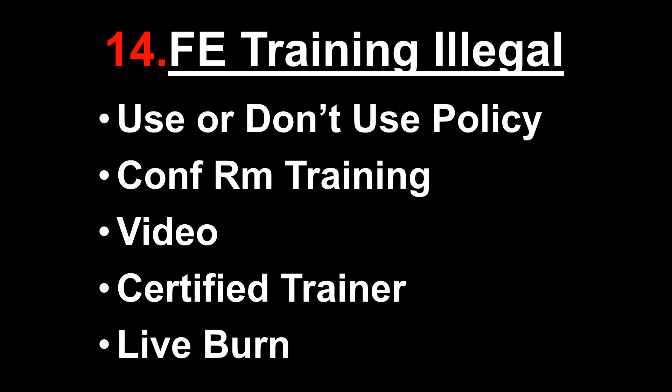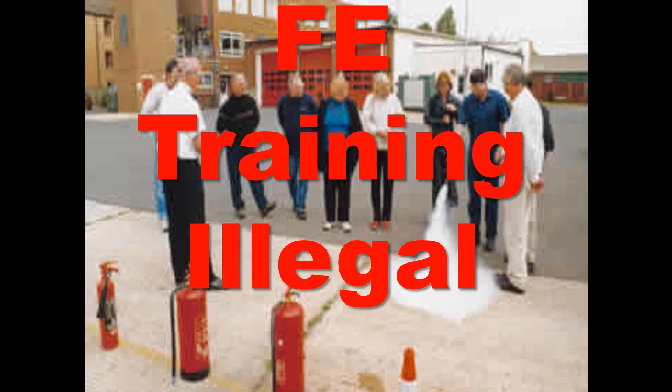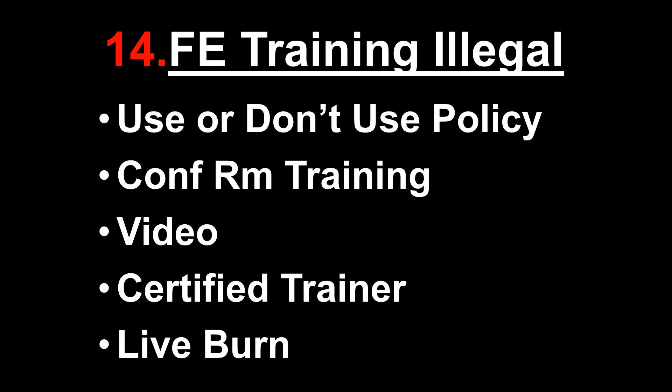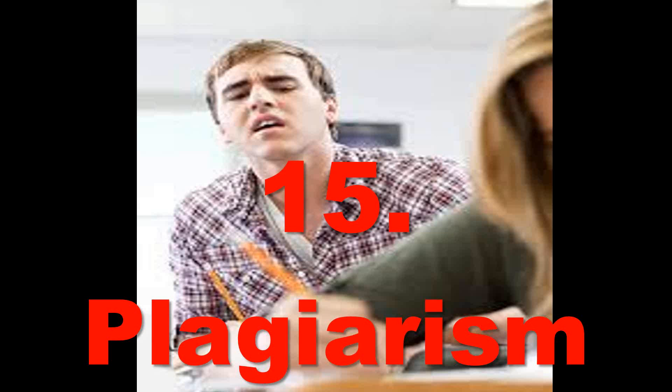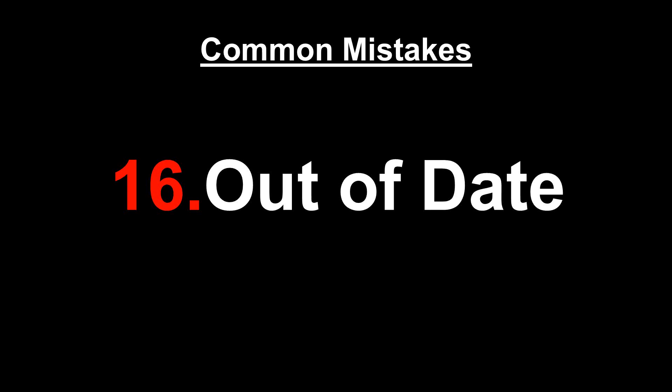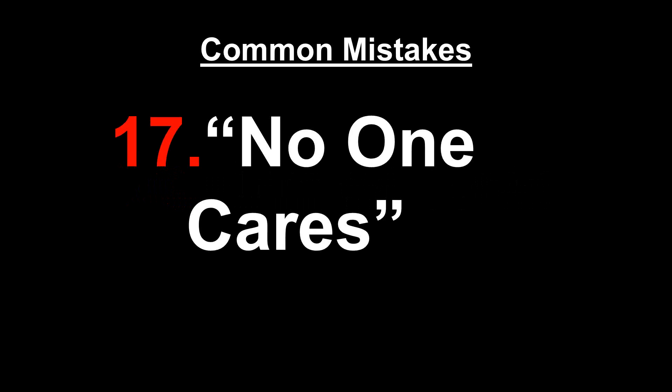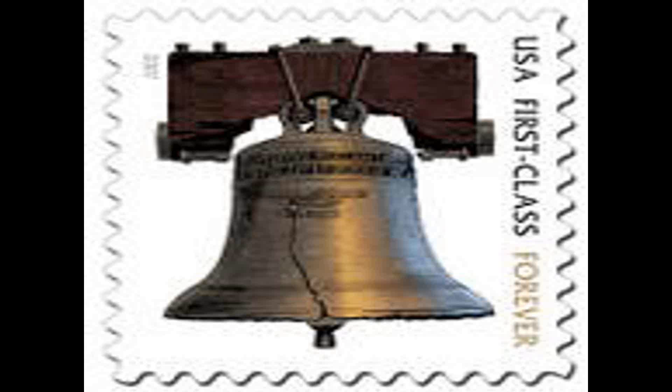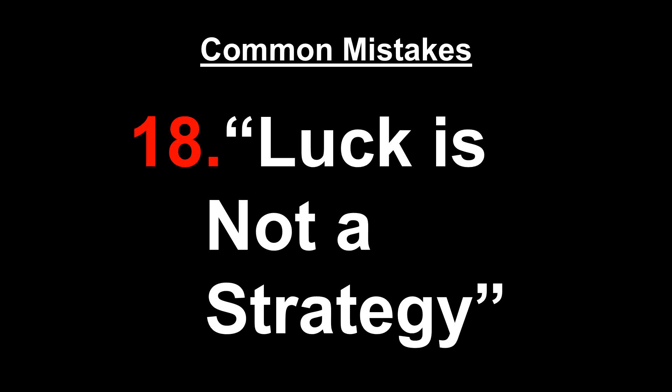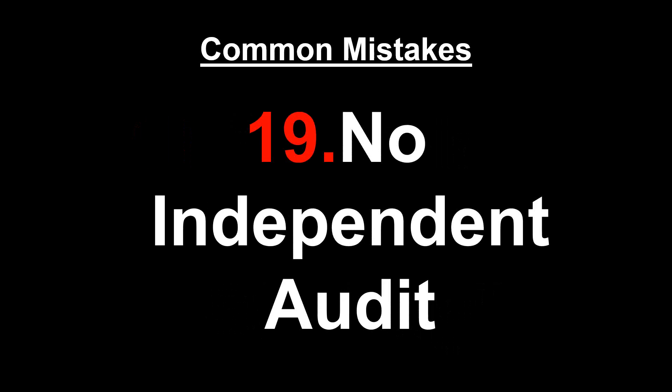Continuing the list: Mistake 14/15 — fire extinguisher training done illegally without a use-or-don't-use policy, approved video, certified trainer, and live burn. Mistake 15/16 — plagiarism: copying and pasting other plans. Mistake 16/17 — plans out of date, not useful for current regulations. Mistake 17 — 'no one cares.' Bonus mistake 18: luck is not a strategy; you can't operate from denial. Bonus mistake 19: no independent audit of your current emergency planning, just as you audit financials annually. A third-party independent assessment is essential — internal assessments are not believed by OSHA, courts, or juries.